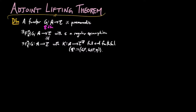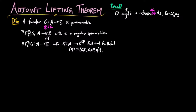To prove the adjoint lifting theorem, we recall that: one, a parallel pair of morphisms FG is reflexive if and only if there exists a morphism S such that FS is equal to the identity on B, which is equal to GS; and two, the adjoint triangle theorem.